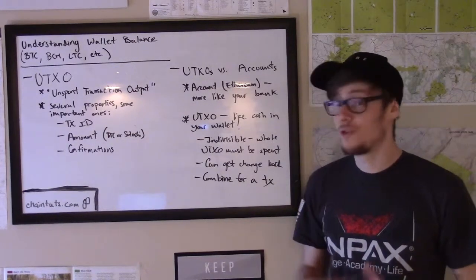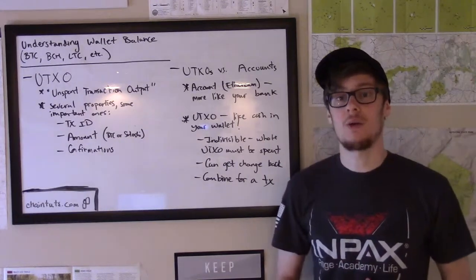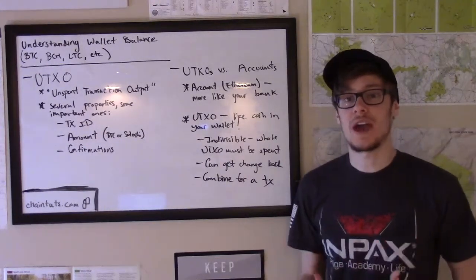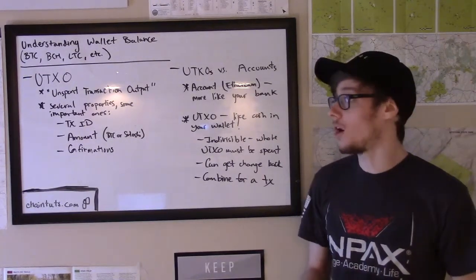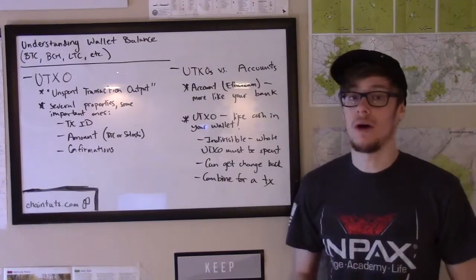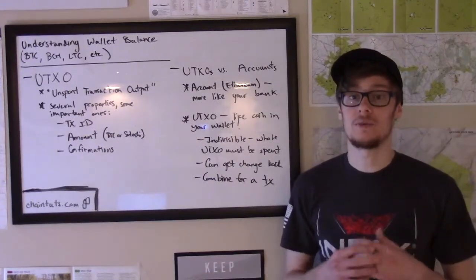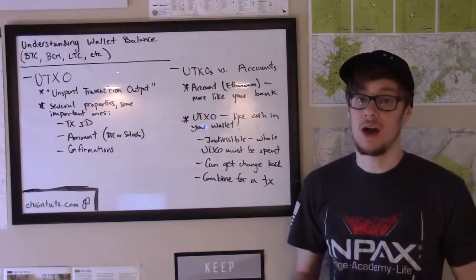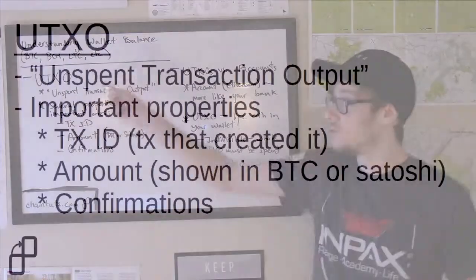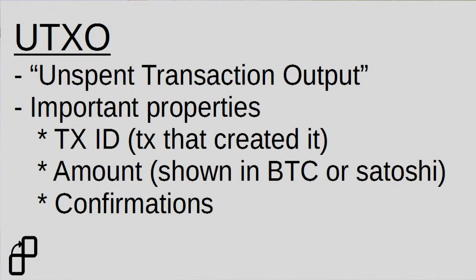Before we discuss how we can understand our address and wallet balance, we need to talk about the concept of the unspent transaction output, or UTXO.